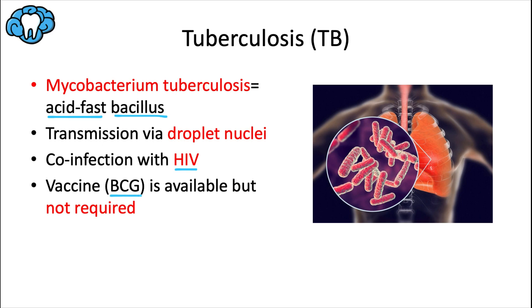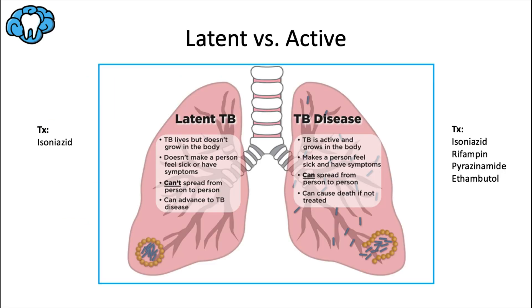BCG is the name of the vaccine for tuberculosis — it stands for Bacillus Calmette-Guérin, named after its inventors. However, this vaccine is not widely used in the United States and is only recommended for very specific people. Routine immunization against TB is not required for dental professionals.